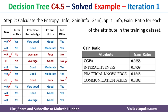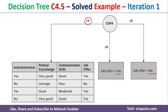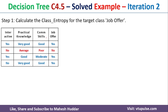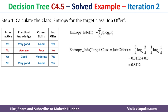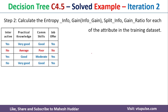For the CGPA ≥ 9 subtree, we remove the CGPA attribute and consider only those four rows. We recalculate the entropy of this subset: with 3 yes and 1 no examples, the entropy info is 0.8112. We then calculate entropy info, gain, split info, and gain ratio for the remaining three attributes: interactiveness, practical knowledge, and communication skill.